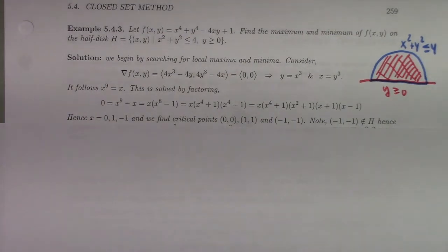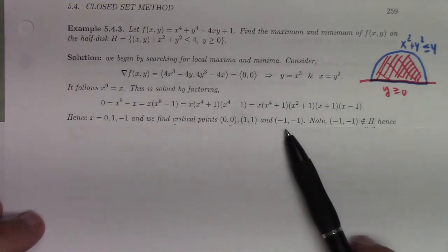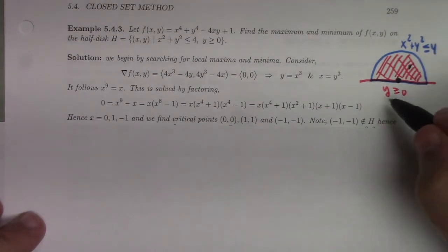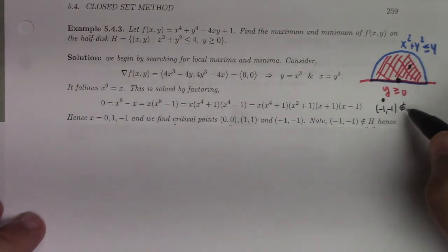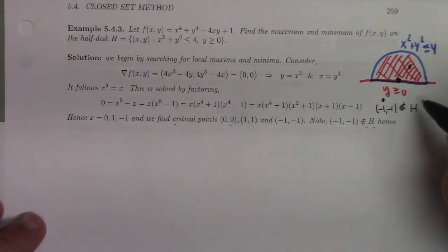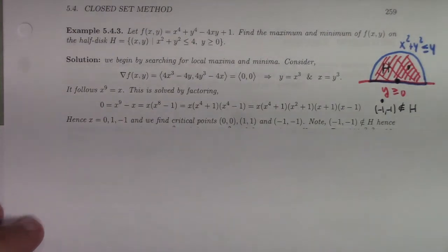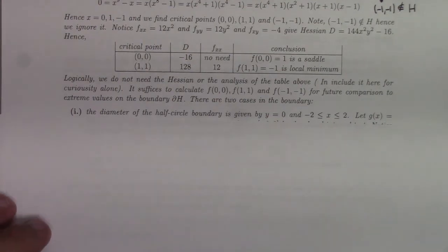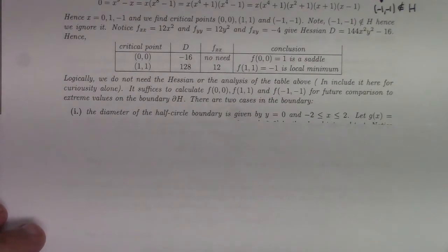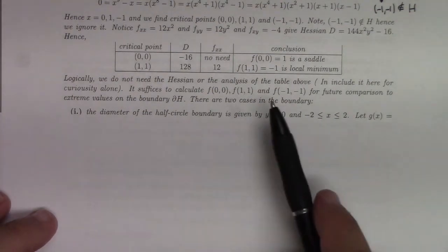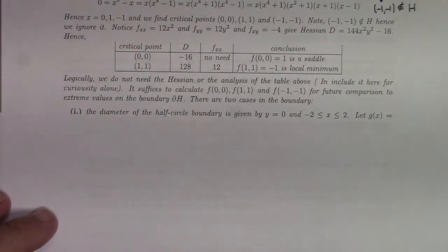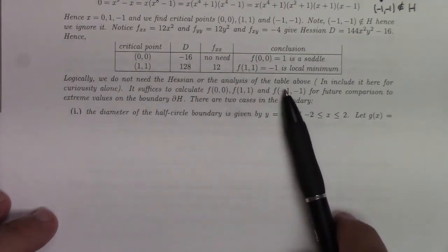We've got critical points at (0,0), (1,1), and (-1,-1). However, one of our critical points—watch out for this—(-1,-1) is not an element of the half disk H. Technically, you don't need to check the second derivative test, because just like with the closed interval method, you just make a list of values and pick winners and losers. But it is fun to look at it, and if you do look at (0,0) and (1,1), you get a saddle for the origin and a local minimum for the other one. Logically, we do not need the Hessian or the analysis of the table above—I include it here for curiosity alone. It suffices to just calculate the values of the function at those critical points.